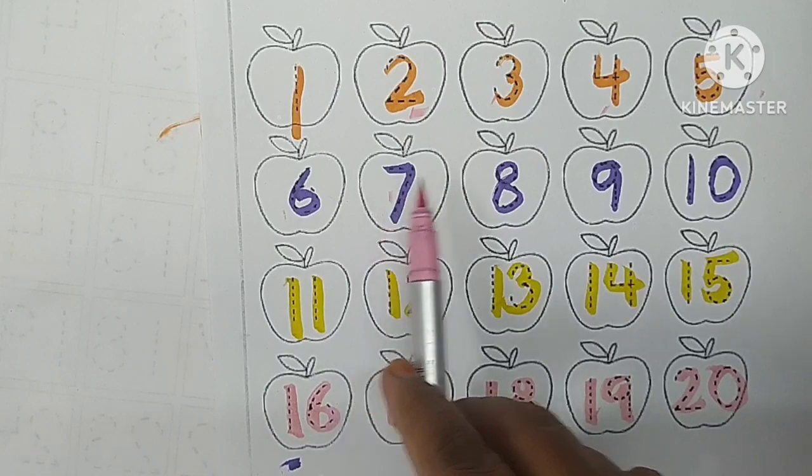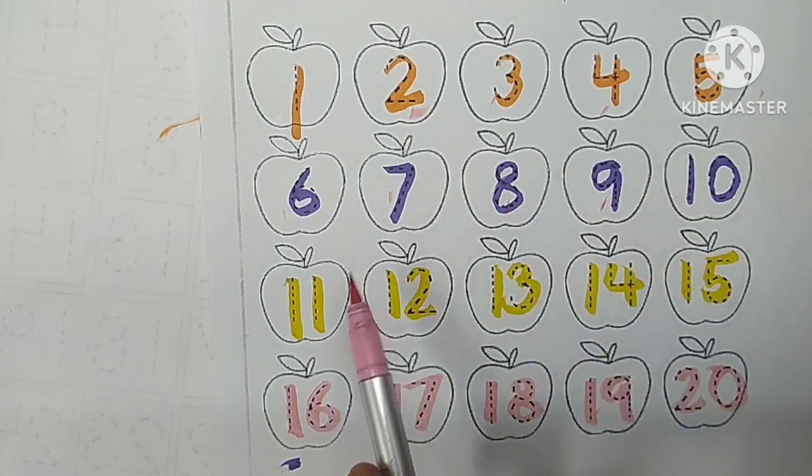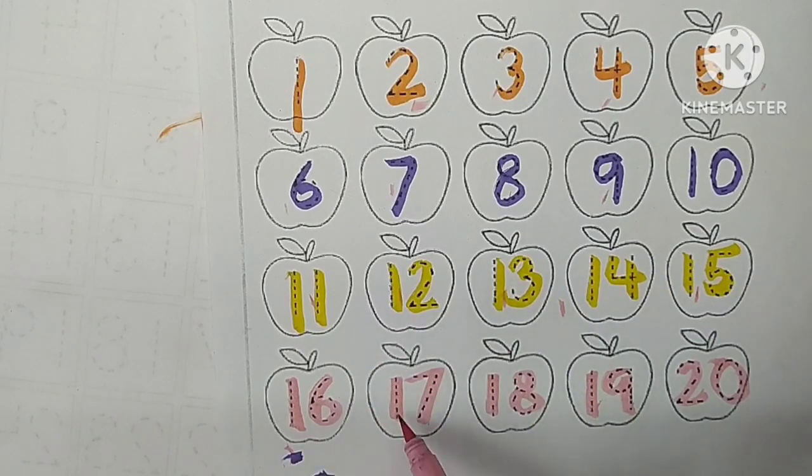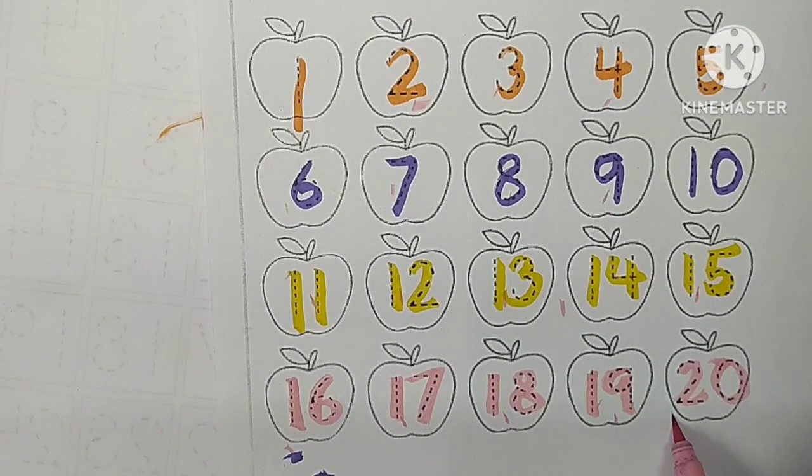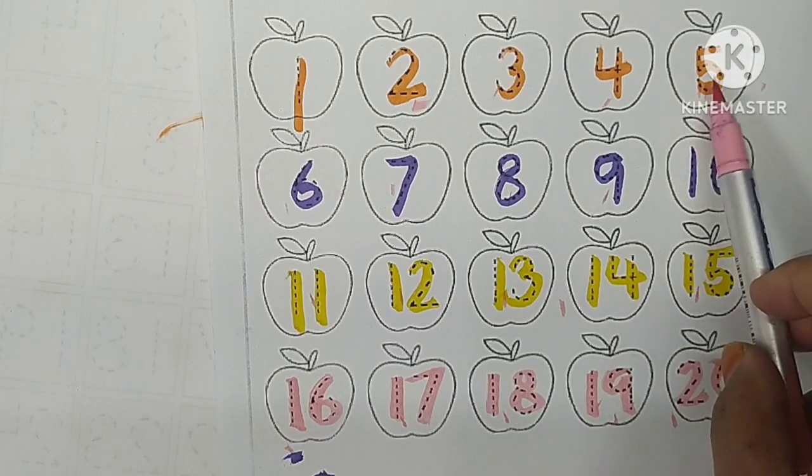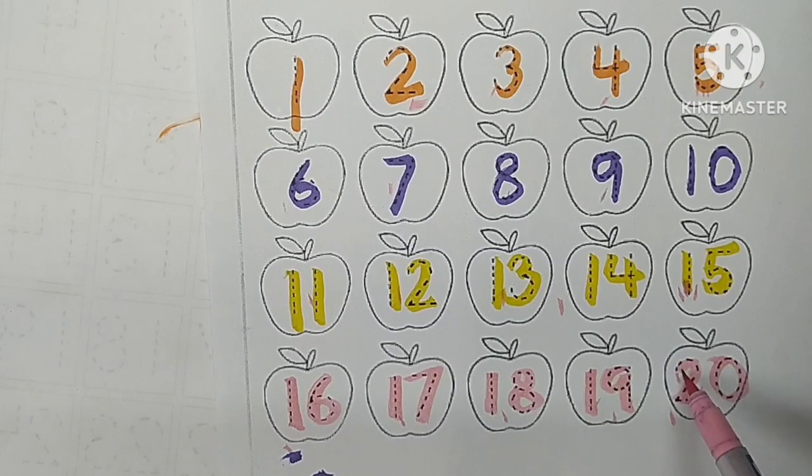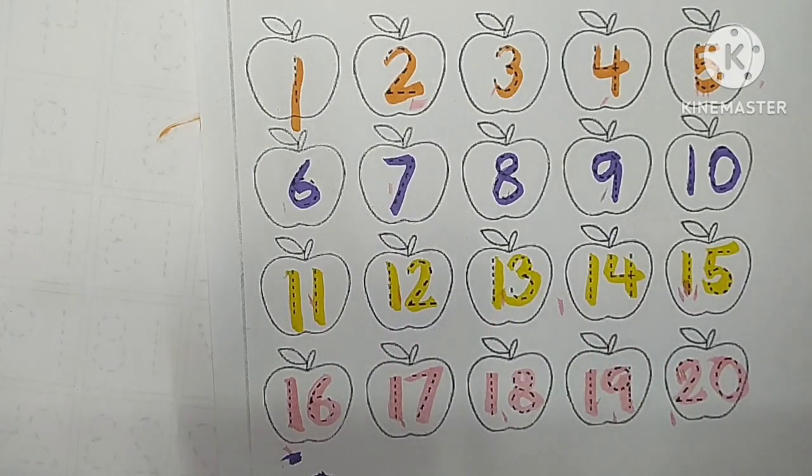Eleven, twelve, thirteen, fourteen, fifteen, sixteen, seventeen, eighteen, nineteen, two zero, twenty. Orange color, blue color, yellow color, peach color. Okay, twelve, twenty, three, four, five. One, fifteen, five, six, nineteen.